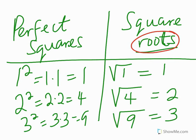So when we talk about the square root of 1, this means if we multiply 1 two times, it gives us 1. When we talk about the square root of 4, which is 2, this means if we multiply 2 two times, it gives us 4. The square root of 9 is 3, because when we multiply 3 two times, it gives us 9.